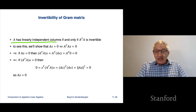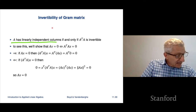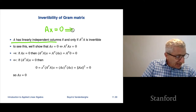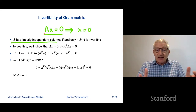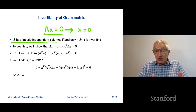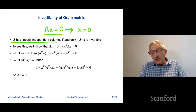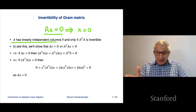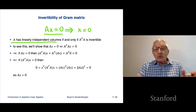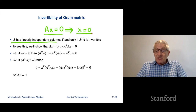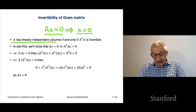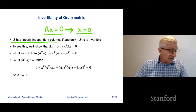What does it mean to say it has linearly independent columns? It basically says that if Ax equals 0, that implies x equals 0. This simply says there's a linear combination of the columns of A with coefficients given by x_i that equals 0. Linear independence says the only way to do that is when all the coefficients are 0. That's what it means for the columns of A to be linearly independent.